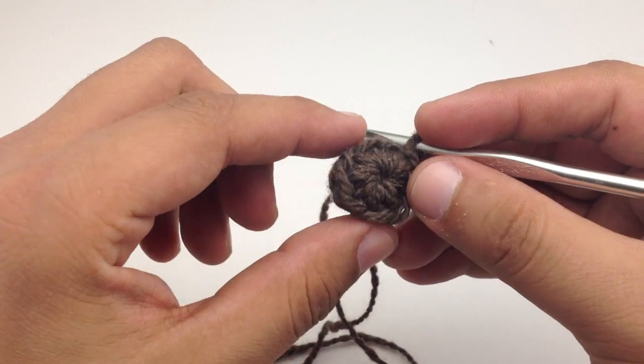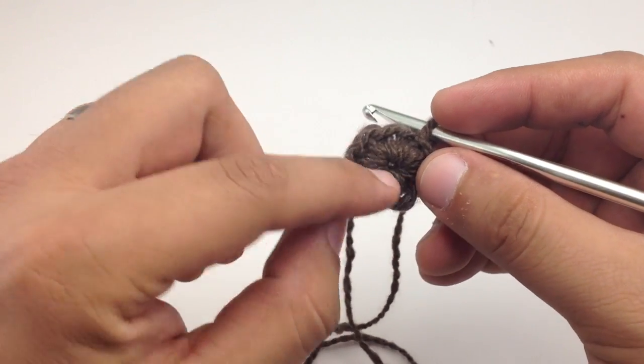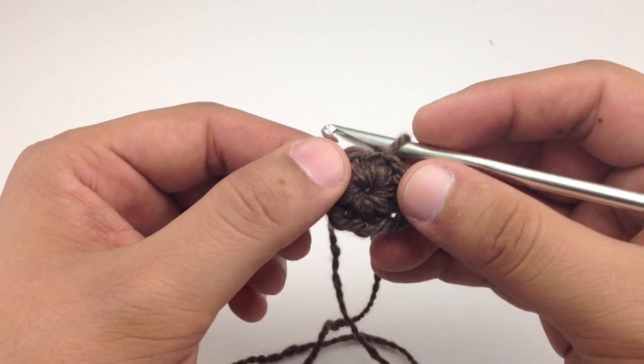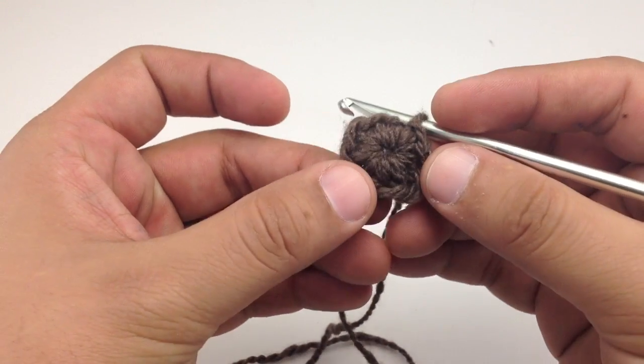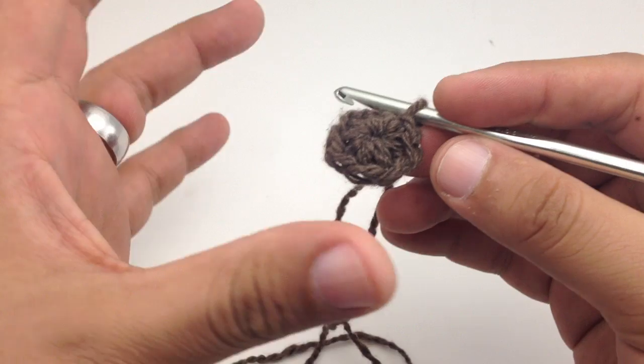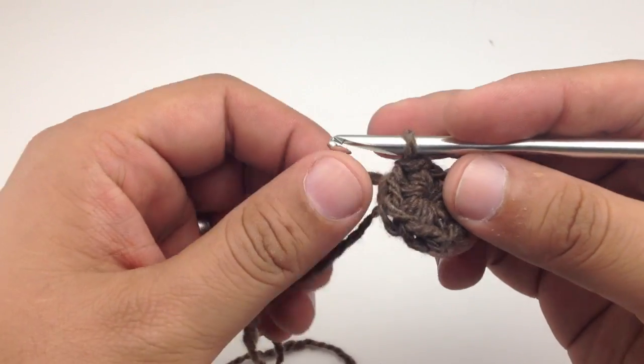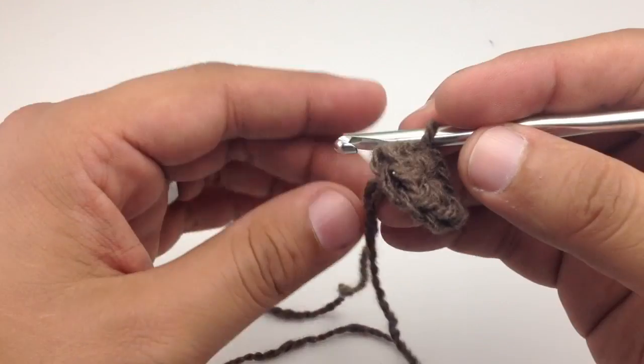It's also really good for doing amigurumi projects when you're coming from the top down, or if you want to make a hat from the top down or a shawl from the center out. There's lots of uses for this and it's a great little technique for getting started from the center of your work.